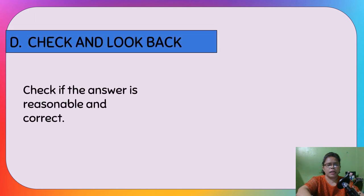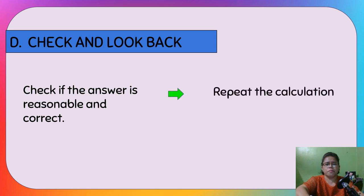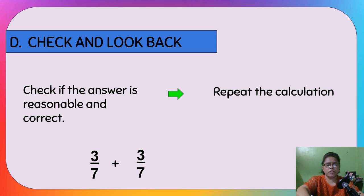Now let's check and look back — check if the answer is reasonable and correct. You can repeat the calculation differently. Since 3/7 is one half, if you add another 3/7, that's another half, and together they equal 6/7, the original amount of sugar given in the problem. So our answer is correct.